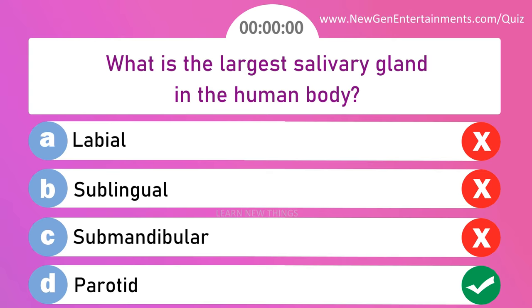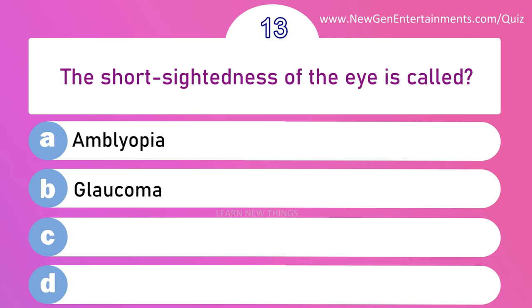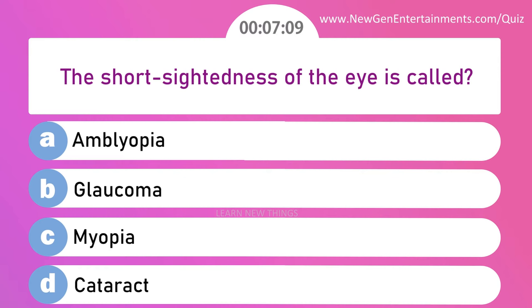The short-sightedness of the eye is called — options: A) Amblyopia, B) Glaucoma, C) Myopia, and D) Cataract. Answer is option C: Myopia.